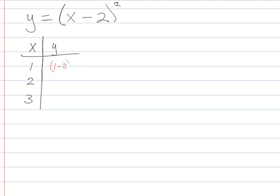Alright, so I have 1 minus 2 squared. So it's negative 1 squared, which is 1. 2 minus 2 squared, which is 0 squared, which is 0. And then 3 minus 2 squared is 1 squared is 1. So I have 3 points here. I have 1, 1, 2, 0, and 3, 1.